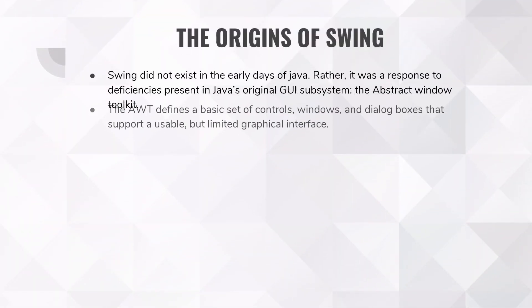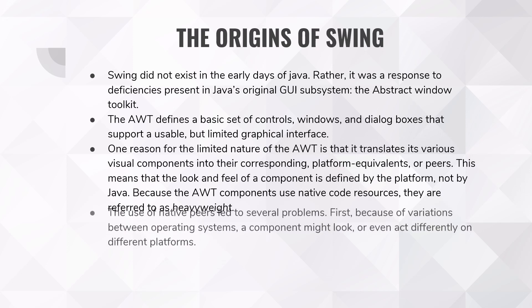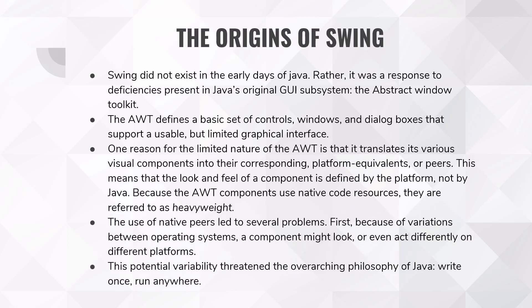Origins of Swing. Swing did not exist in the early days of Java. Rather, it was a response to the deficiencies present in Java's original GUI subsystem, that is the Abstract Window Toolkit. The AWT defines a basic set of controls, windows, and dialog boxes that support a usable but limited graphical interface. One reason for the limited nature of AWT is that it translates its various visual components into their corresponding platform-equivalent peers. This means that the look and feel of a component is defined by the platform, not by Java. Because the AWT components use native code resources, they are referred to as heavyweight.